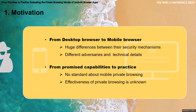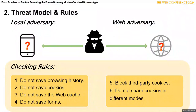Meanwhile, its deployment on mobile platforms has not been well evaluated. A private browser should not leave any trace of users' browsing activities. We consider two kinds of adversaries. A local adversary can physically access a user's mobile phone and get root privilege, aiming to uncover the user's activities during private browsing. A web adversary can control websites that the user visits, with the target of linking a user in private mode to the same user in normal mode.